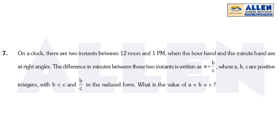Now we will discuss question number 7. On a clock, there are two instances between 12 noon and 1 PM when the hour hand and the minute hand are at right angles.